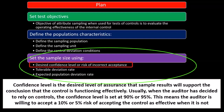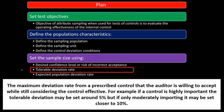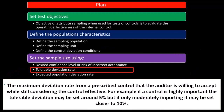In statistical sampling, we're recognizing that we're at a 90 to 95 percent confidence level, which means we're willing to accept that the sample results are incorrect at 5 or 10 percent. The tolerable deviation rate is the maximum deviation rate from a prescribed control that the auditor is willing to accept.